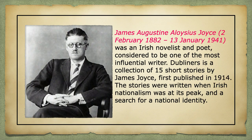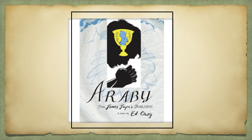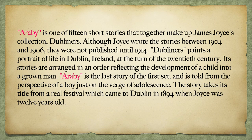James Augustine Aloysius Joyce was an Irish novelist and poet, considered to be one of the most influential writers. Dubliners is a collection of 15 short stories by James Joyce, first published in 1914. The stories were written when Irish nationalism was at its peak and during a search for a national identity. Dubliners paints a portrait of life in Dublin, Ireland, at the turn of the 20th century.